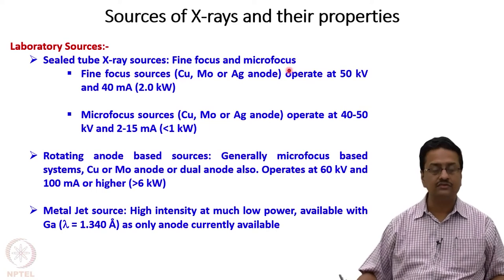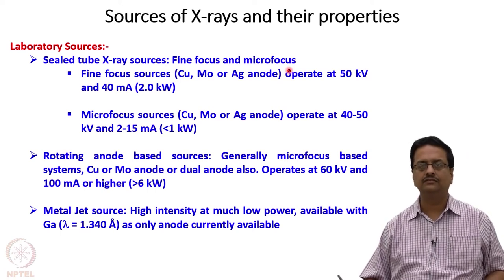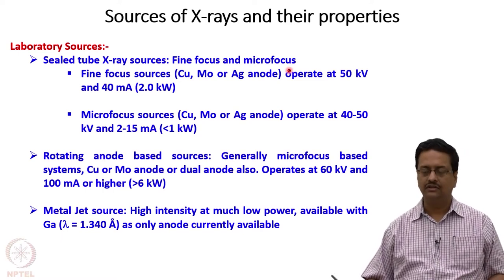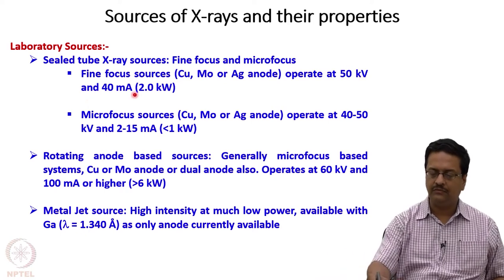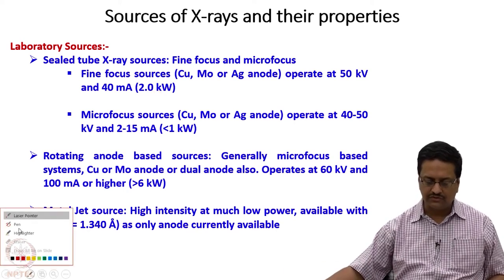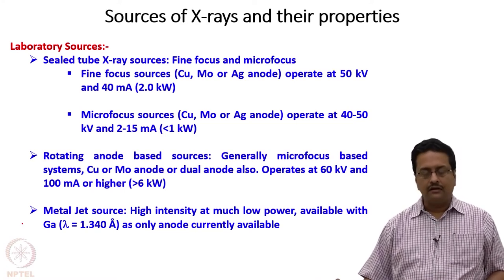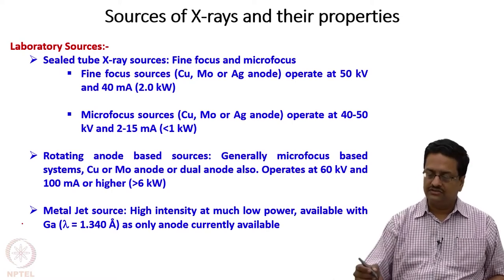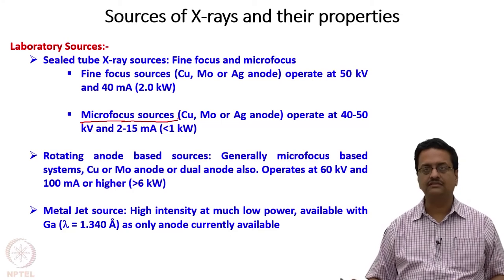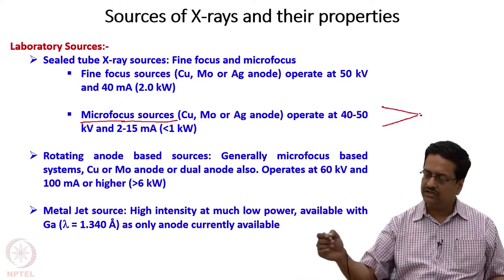In laboratory sources we have a variety of X-ray sources. We can use sealed tube X-ray sources, and in those we have two options: a fine focus and a micro focus source. A fine focus source with copper, molybdenum, or silver anode generally operates at around 50 kilovolts and 40 milliamps, giving about 2 kilowatts of energy. This is the most common source of radiation used in many X-ray diffractometer laboratories. Modern X-ray diffractometers come with micro focus sources where the X-ray beam coming out of the tube is focused onto the crystal.